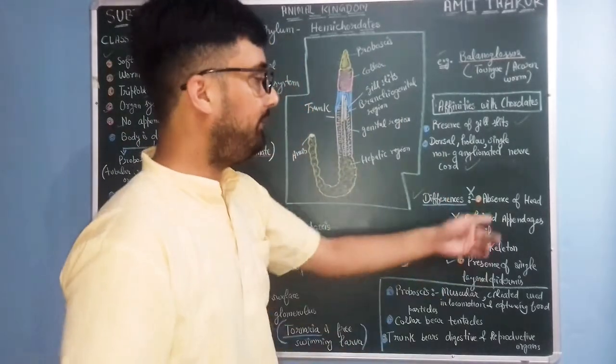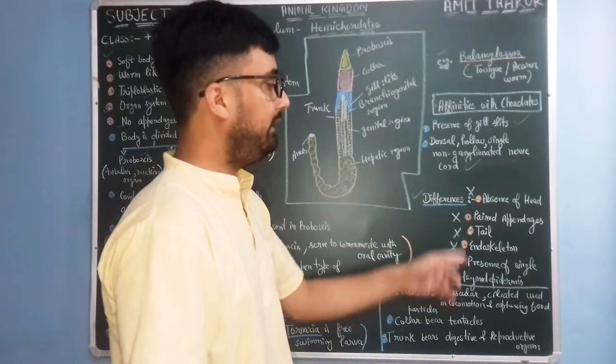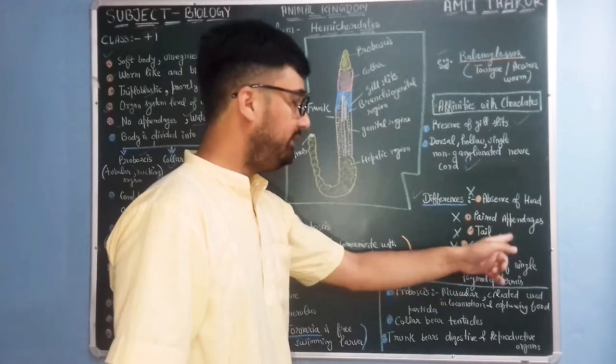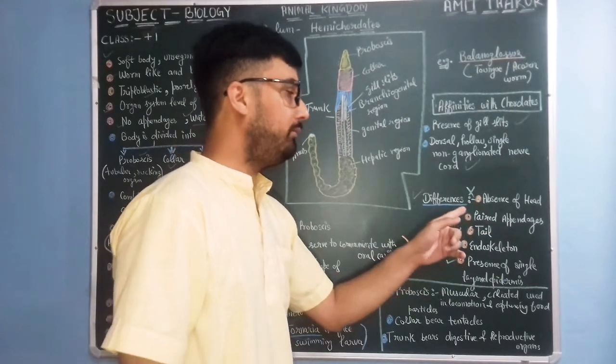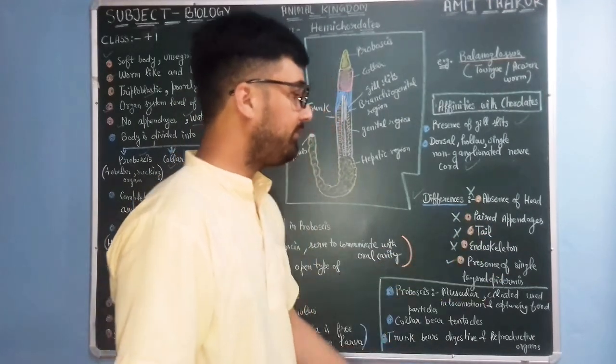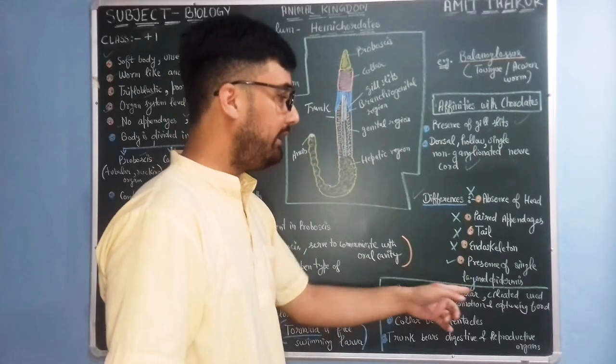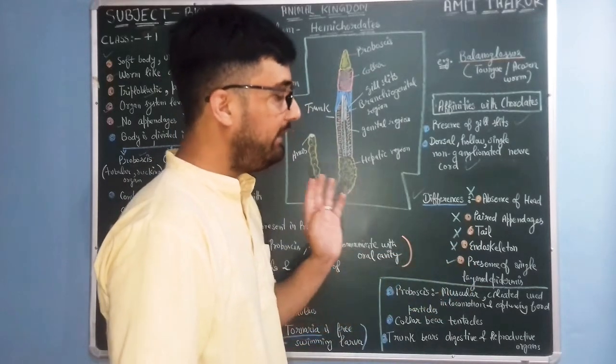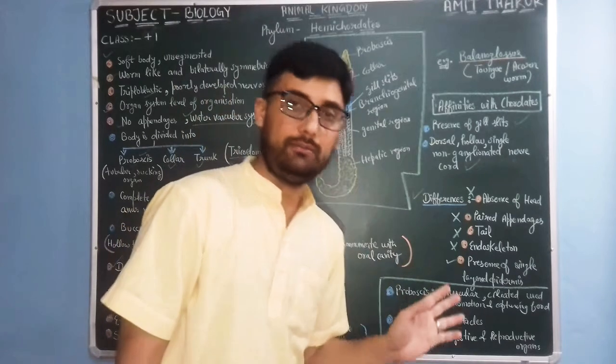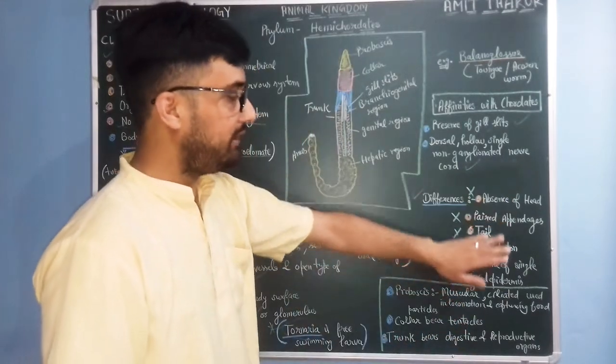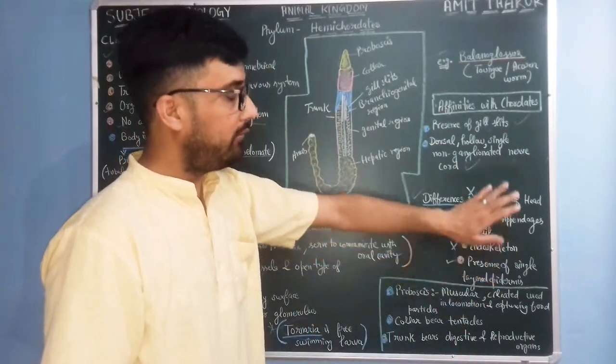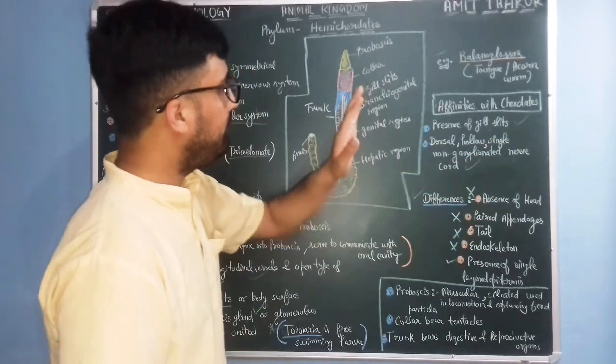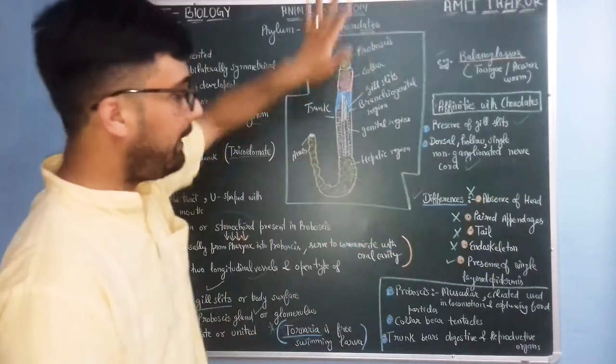And differences: there is absence of head, absence of paired appendages, absence of tail and endoskeleton, and presence of only single layer epidermis. All of these features are of chordates which are absent in case of hemicordates.